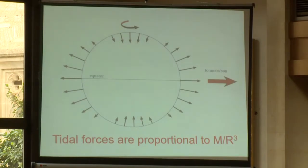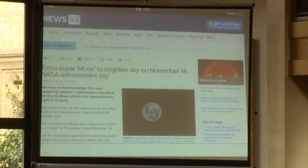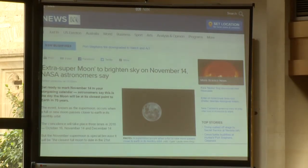In a nutshell, tidal forces are proportional to mass over r cubed. We had the supermoon last Monday, when the moon was unusually close to the Earth, so the lunar tides were very large indeed. But not much happened, because it was the wrong time of year — the solar tides were actually quite small. Had this occurred a few weeks ago, it would have been very interesting. The solar tides are important as well.